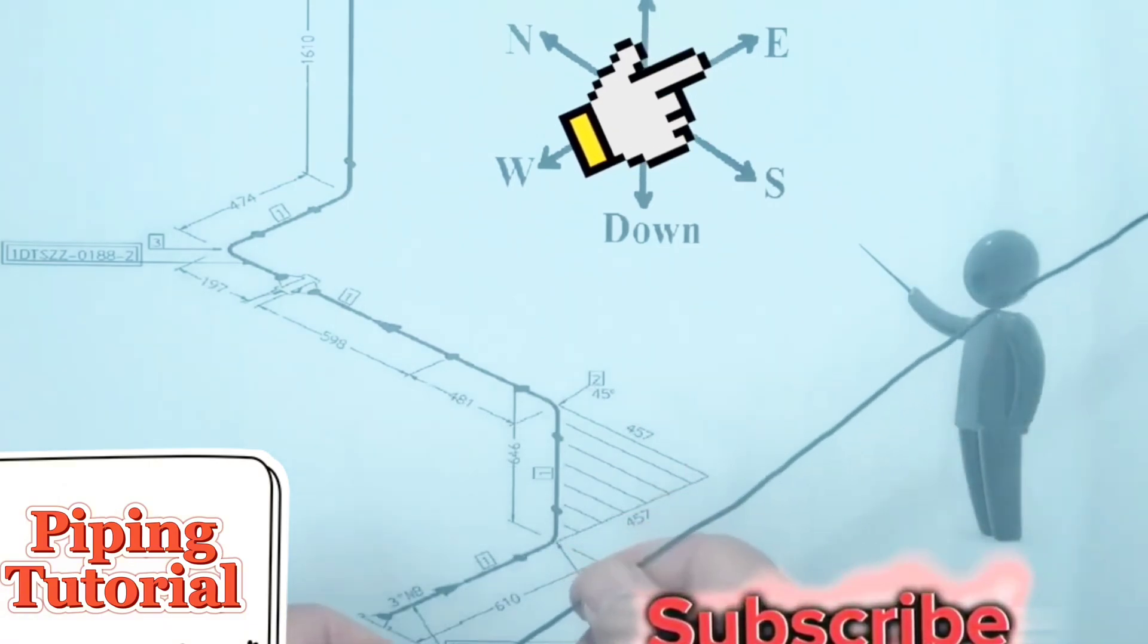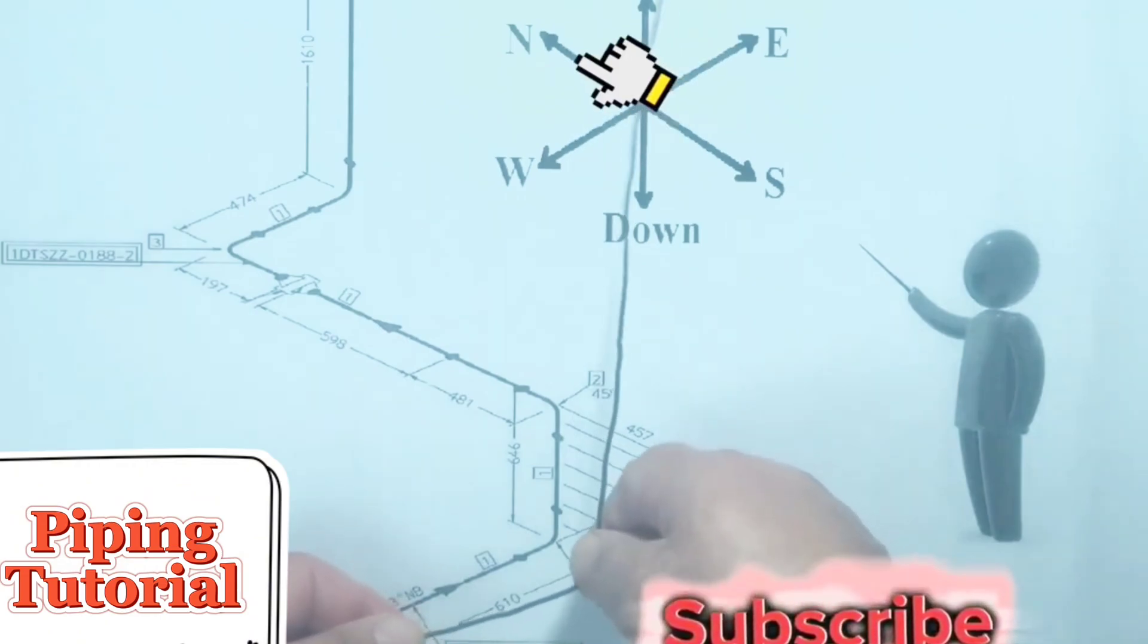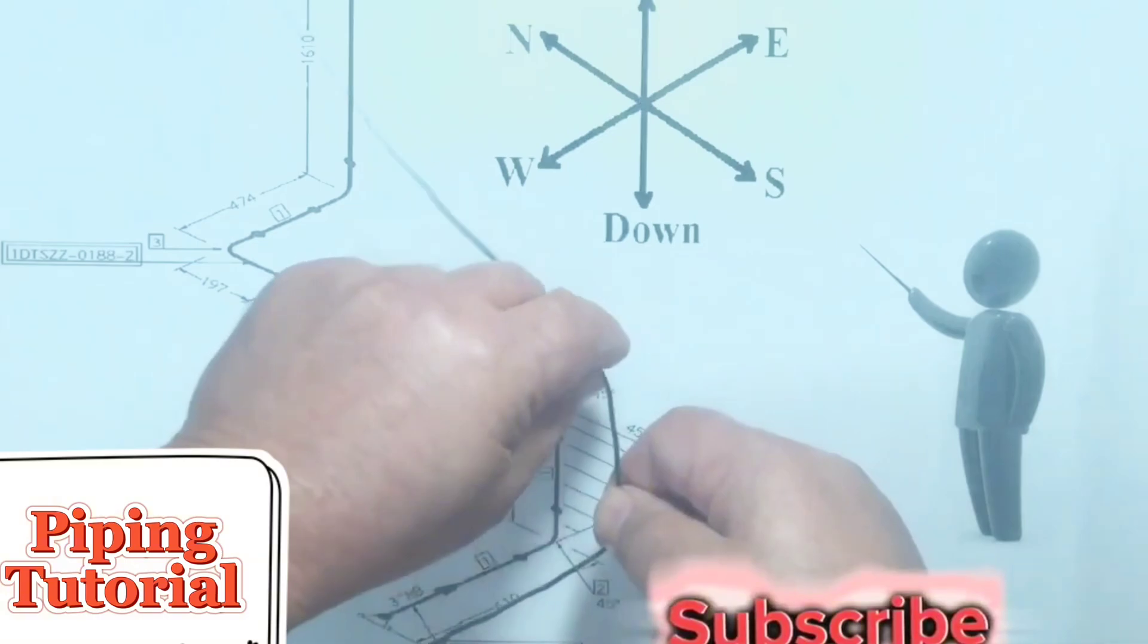Since the pipeline is traveling to the east direction, we hold the wire in the east direction. Then the wire bending first to the east direction, then to the north direction under 45 degree.